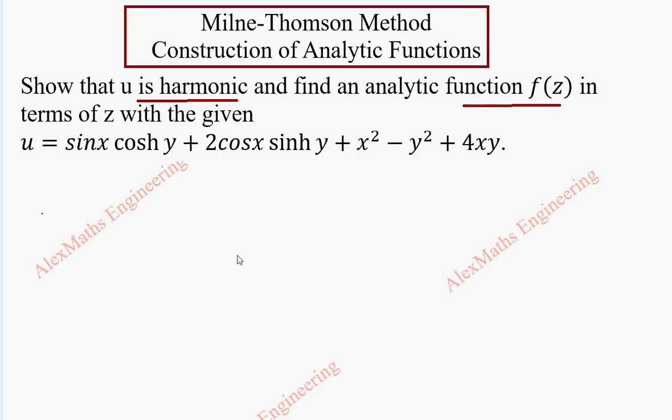Let's take u and find u_x, that is a partial derivative with respect to x. So sin x derivative is cos x and cosh y is a constant which we keep as it is, plus 2 cos x derivative is 2 into minus sin x and y terms are constant, so we keep this as it is. Plus 2x, minus y squared is a constant, here 4y is a constant, x derivative is 1.